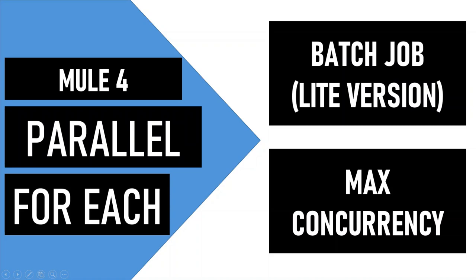Thanks to parallel foreach scope, which was built just to serve the same purpose. Starting from Anypoint Studio 7.6, we have a drag-and-drop option available for parallel foreach. In this video, we'll try to play around the parallel foreach scope and also understand the role of max concurrency and its optimum value.